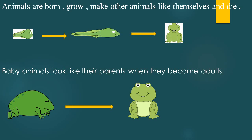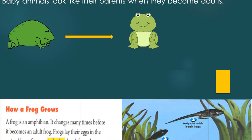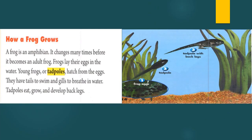Animals are born, grow, make other animals like themselves, and die. Baby animals look like their parents when they become adult. So in here we have a baby frog — they look like their parents when they become adult.